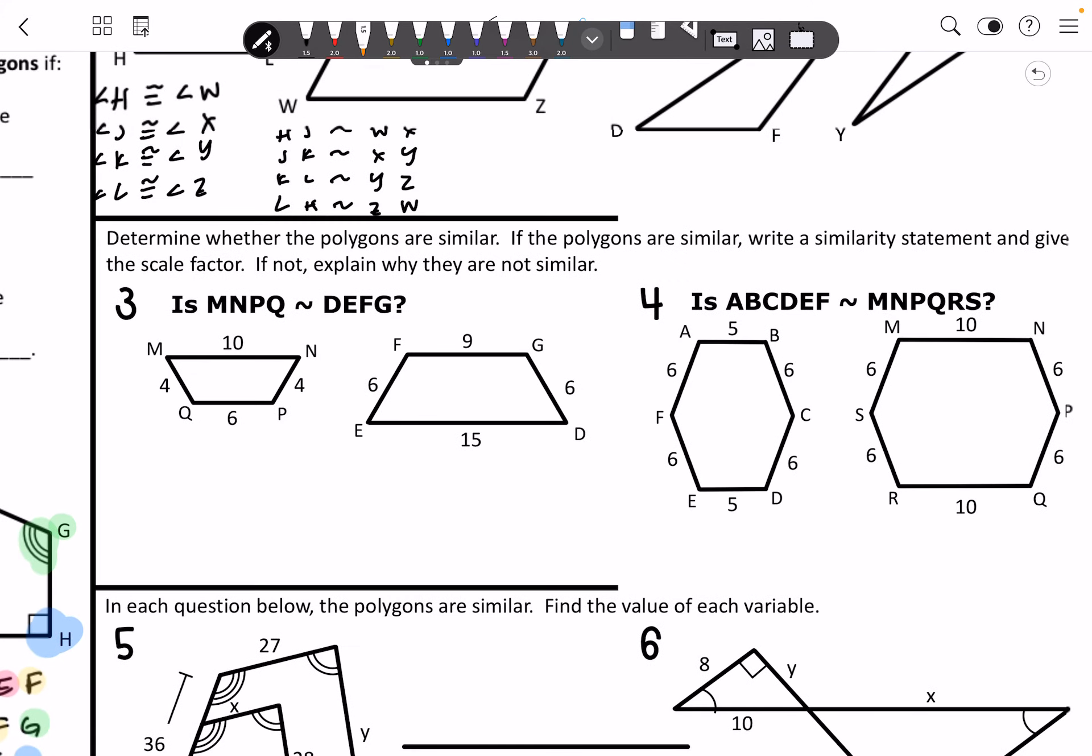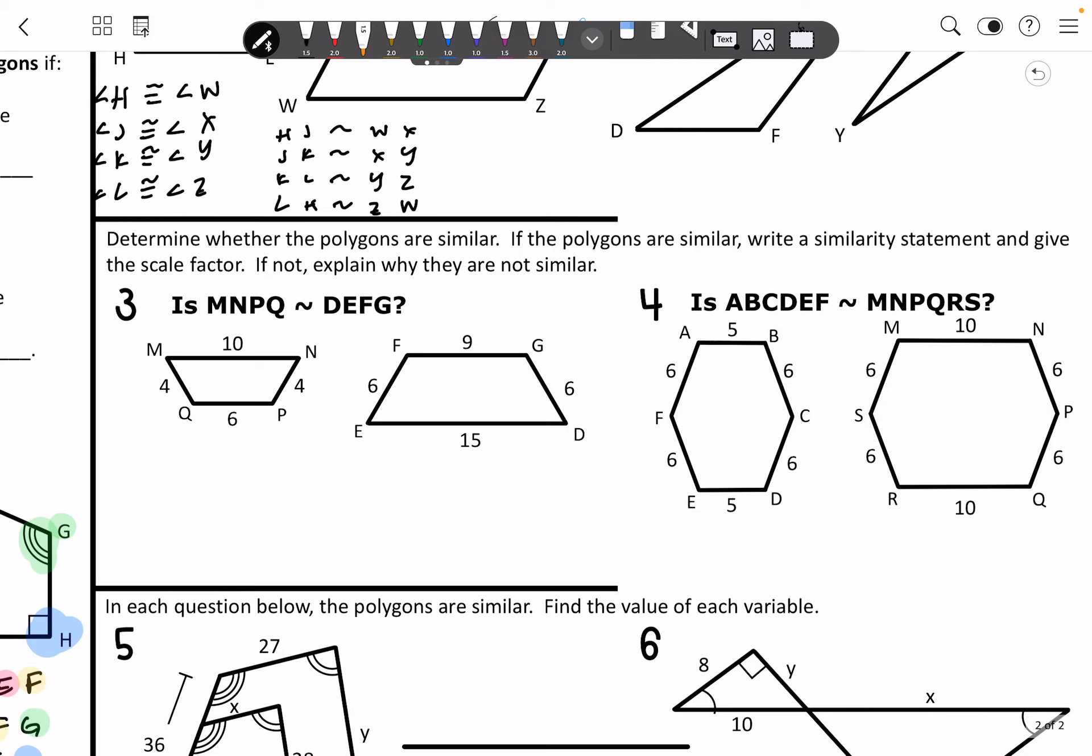Determine whether the polygons are similar. If the polygons are similar, write a similarity statement. So what I'm going to do is I'm going to set up my proportion. So I've got M, N, and then to D, E, F. So I like to know which way it's oriented.